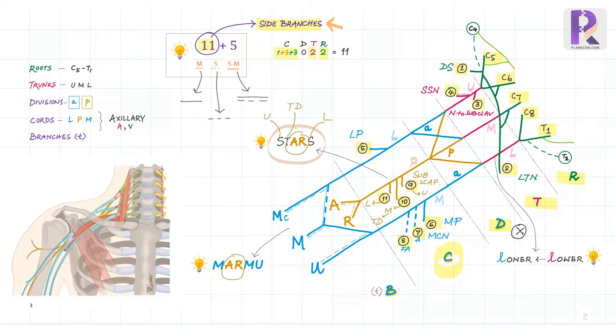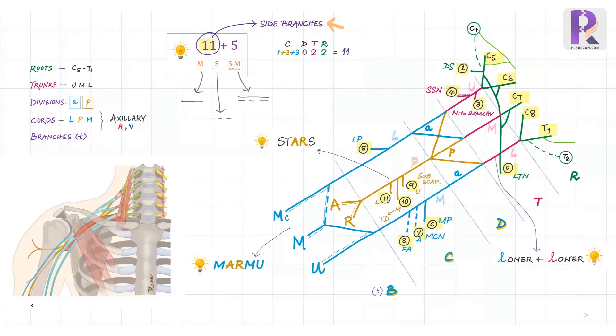Note that subscapular comes from the posterior cord, whereas the suprascapular comes from the upper trunk. Also note that out of these 11 side branches, only one, that is the suprascapular nerve, is sensory motor, whereas the medial cutaneous nerve of arm and forearm are sensory. The remaining eight side branches are pure motor.